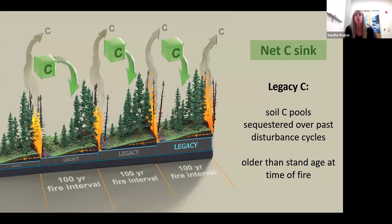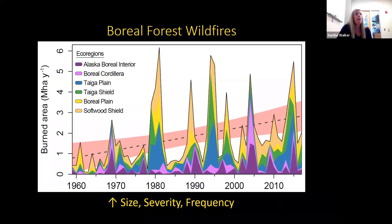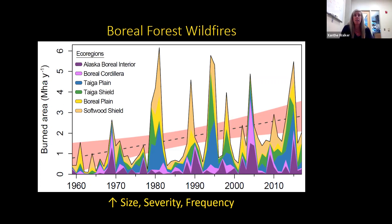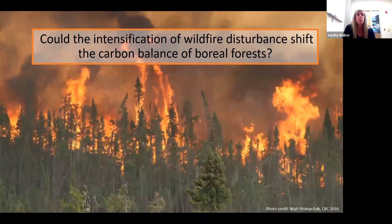But what happens when we start withdrawing bigger amounts or withdrawing more frequently? In other words, what happens to this net carbon sink with a changing fire regime? And we're already seeing this changing fire regime. This is showing total area burned in different ecoregions of the northwestern boreal forest over time. This change in fire size also corresponds to increases in fire severity — so more biomass being combusted — and an increase in fire frequency, with fires occurring more often or burning at a younger stand age. So we wanted to ask how this changing fire regime could alter the carbon balance of boreal forests.